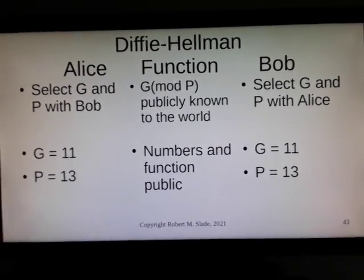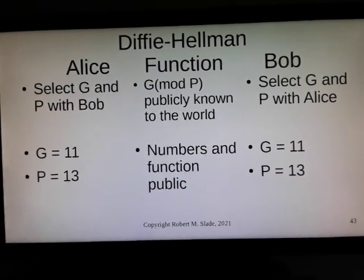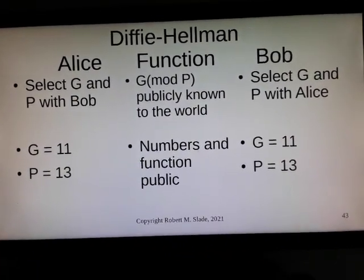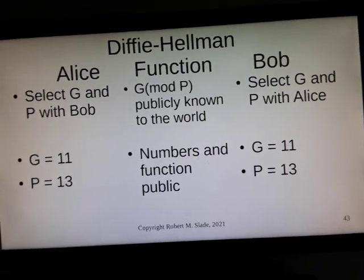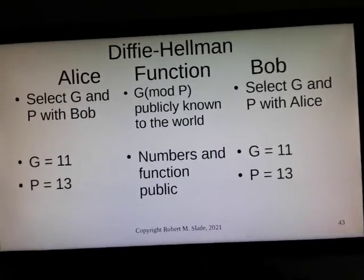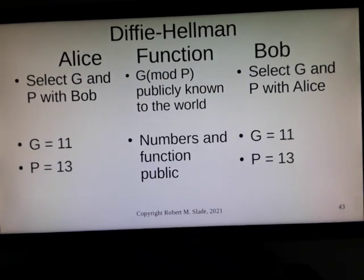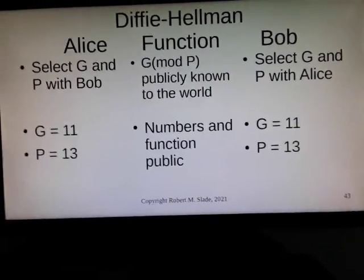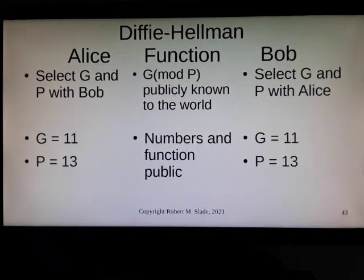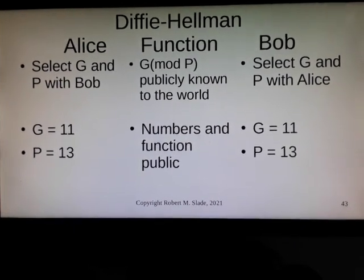Alice and Bob together select G and a number P — G mod P. This is modular arithmetic, otherwise known as clock arithmetic sometimes, because it cycles around and goes up to P and then starts again at one. Alice and Bob select the two numbers G and P to do the modular arithmetic, so G is 11 and P equals 13. They can do this in public — it doesn't matter if anybody knows these two numbers, as we will see.